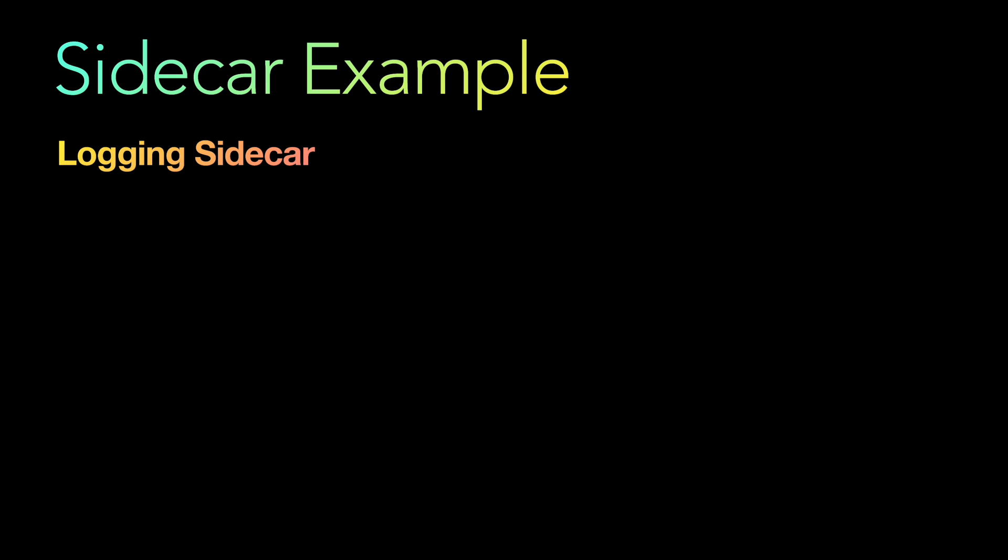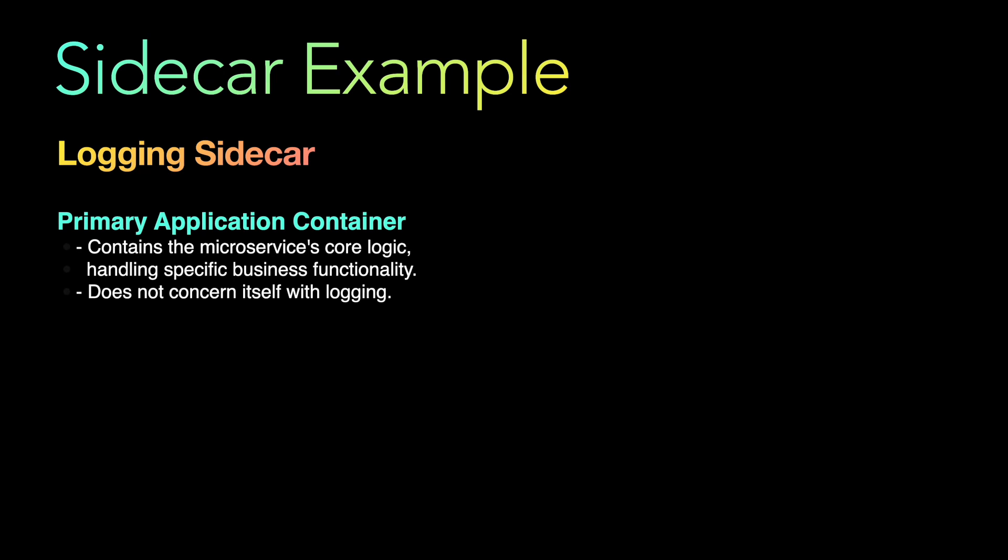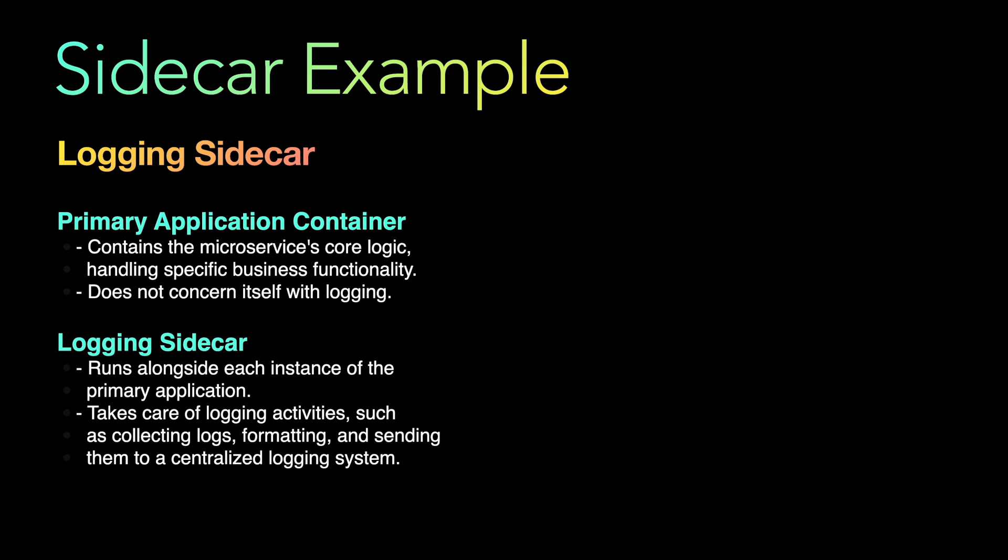Let's look at an actual example: a logging sidecar. The primary application container contains the microservice's core logic handling specific business functionality and does not concern itself with logging. The logging sidecar runs alongside each instance of the primary application and takes care of logging activities — collecting logs, formatting, and sending them to a centralized logging system.